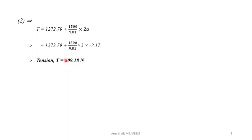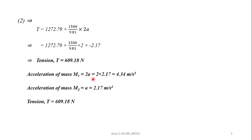Acceleration of block M1 is 4.17 meters per second squared. Acceleration of block M2 is 2.17 meters per second squared. Tension T is 609.18 Newton. Thank you.